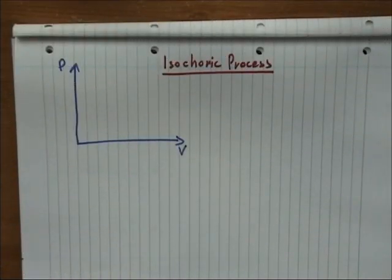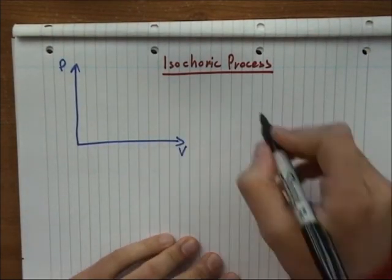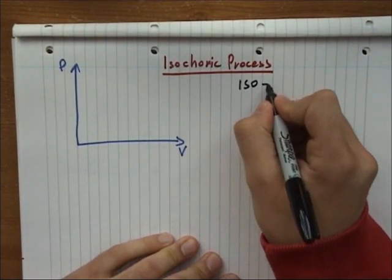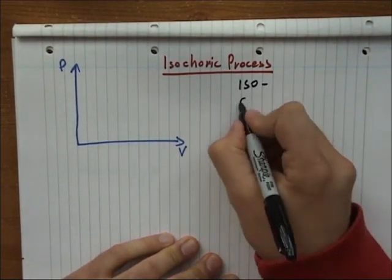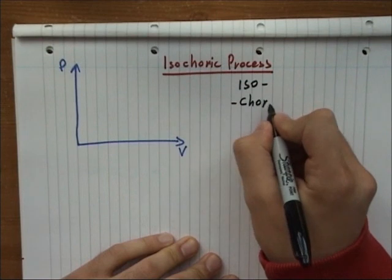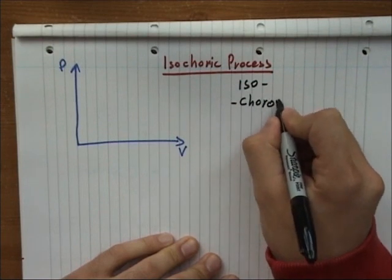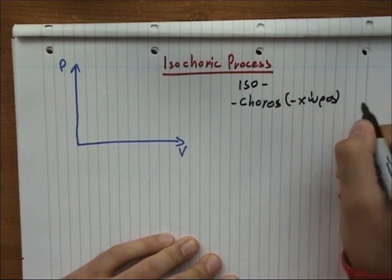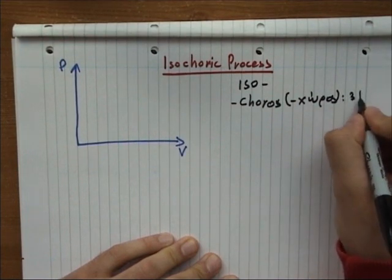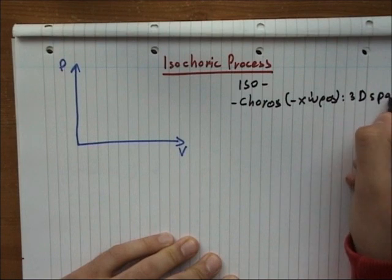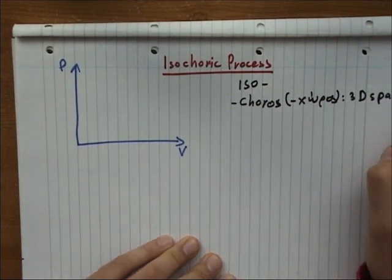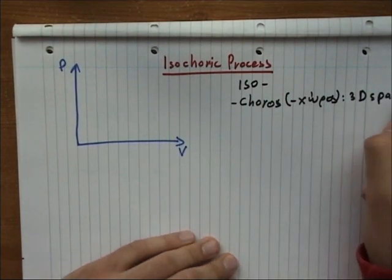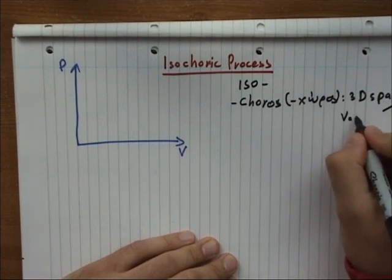Next, we have the third process, called the isochoric process. Again from iso, and choros in Greek, which is 3D space. So this is associated with volume.